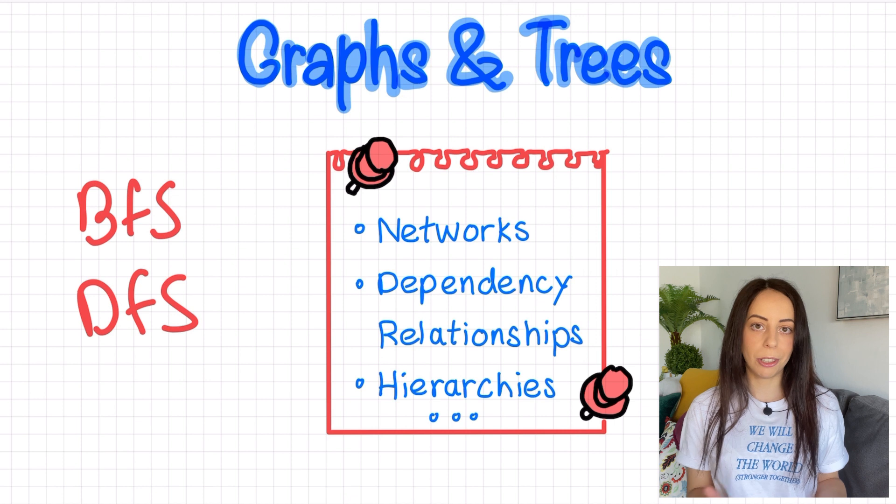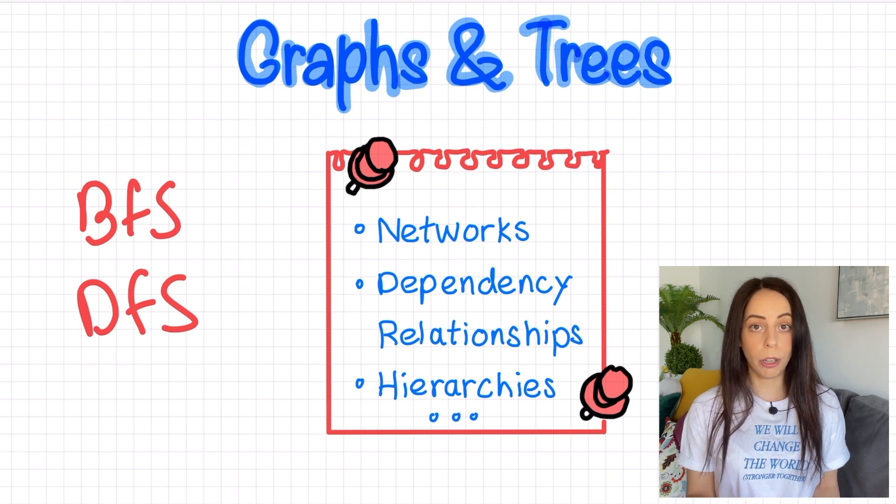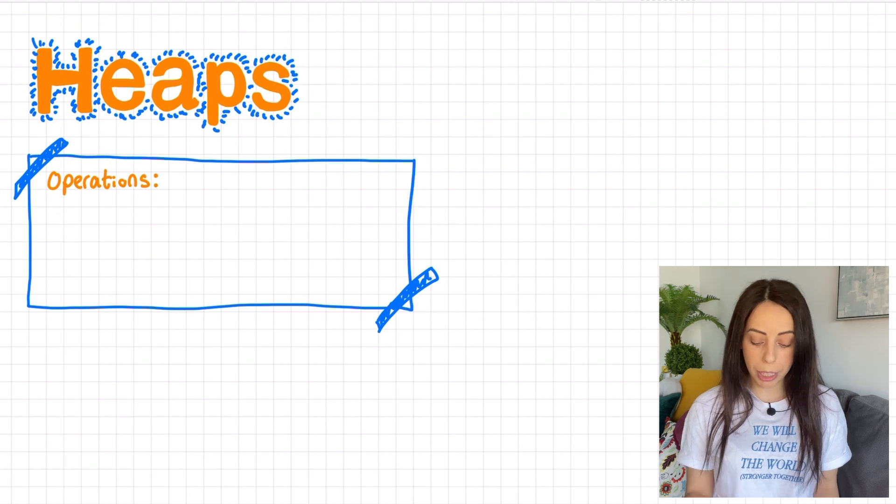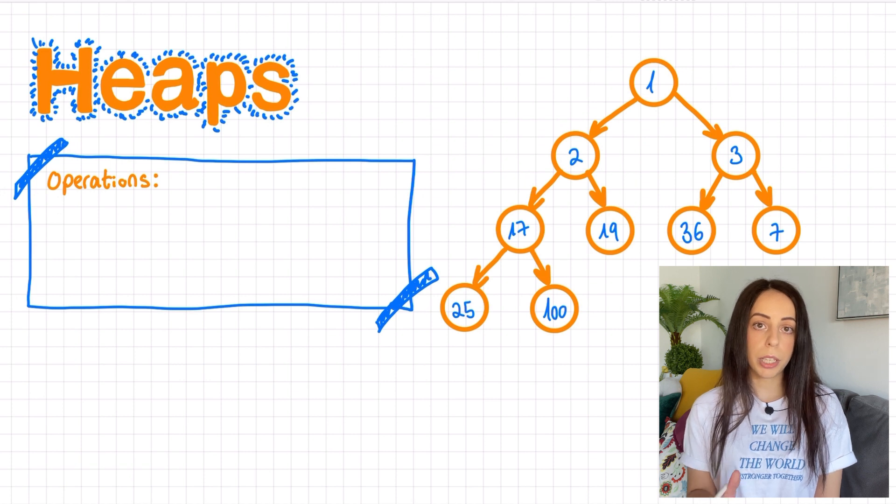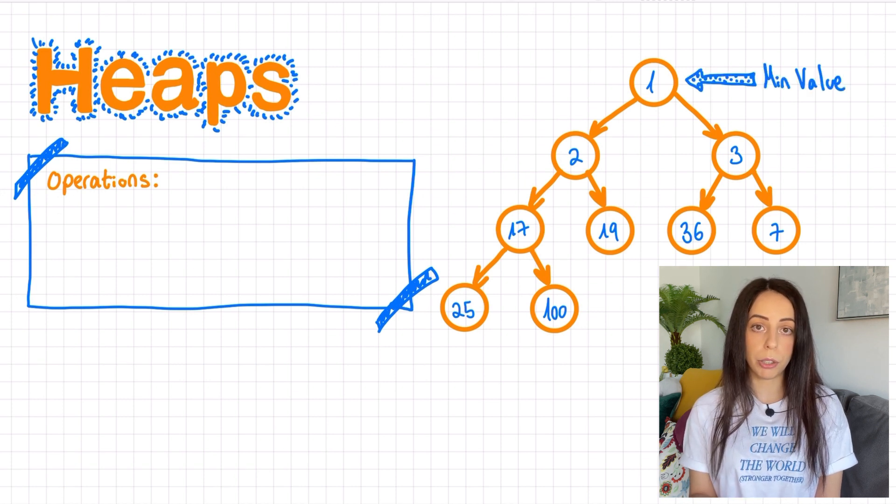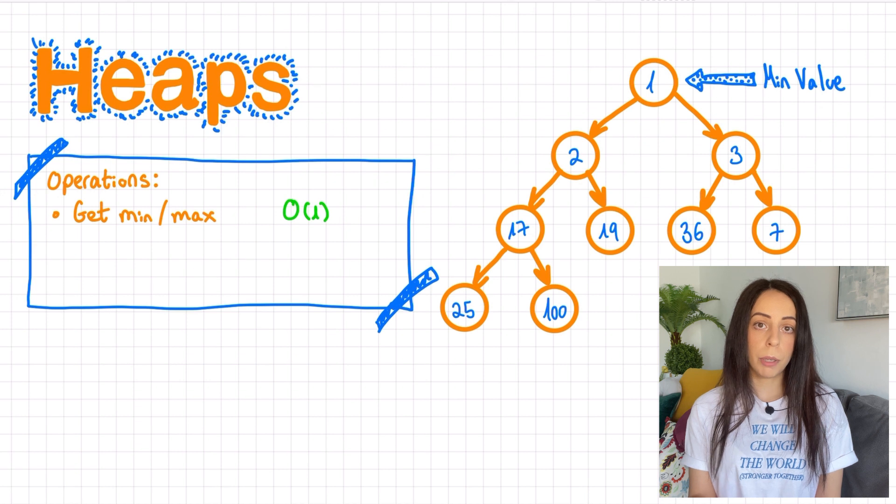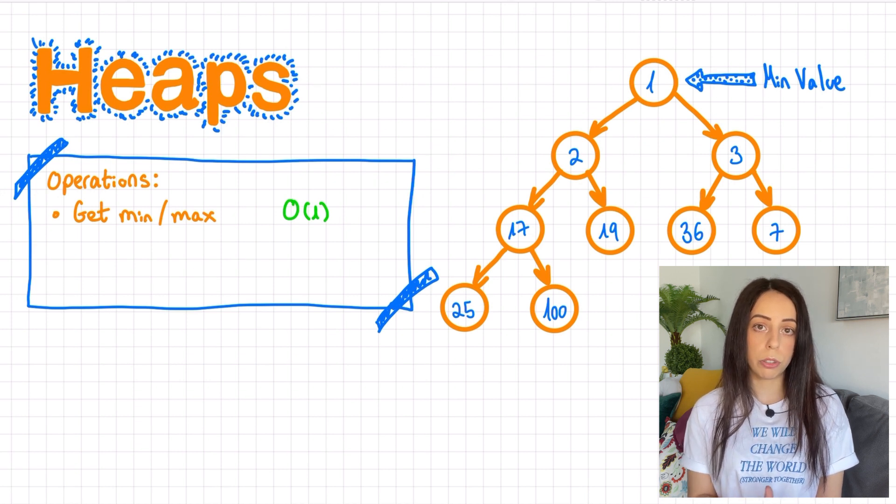And now to our last data structure of this video, the very useful heap. A heap can either be a max heap or a min heap. Here we have an example of a min heap. Heaps are usually visualized as trees, although they are commonly implemented with arrays. But there's really no need to get into those kind of details. All you need to know is this. The top value in a min heap will always be the minimum value in the heap. The top value in a max heap will be the maximum value in the heap. Therefore, retrieving the max or min value will take constant time, because all you have to do is look at the root's value.